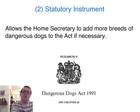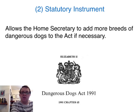One more final example of a Statutory Instrument: under the Dangerous Dogs Act 1991, the Home Secretary can add more breeds that he or she considers to be dangerous to the statute, therefore enabling the courts to be able to do something about it and to protect the public.